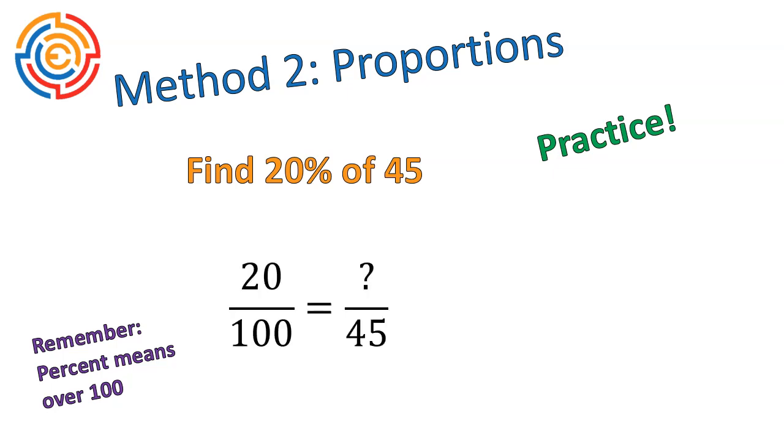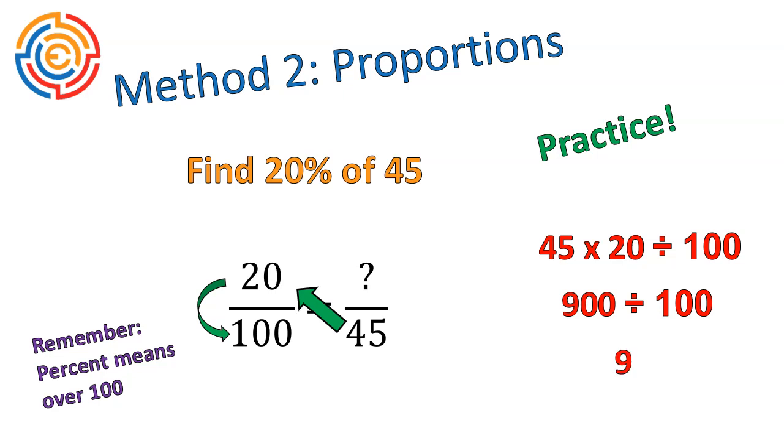All right, there is the proportion. 20 over 100 equals our unknown value over 45. We solve using cross-multiplying. In other words, it's 45 times 20 divided by 100. 45 times 20 is 900. Divided by 100 gives us 9. So our final answer is that 20% of 45 is 9.